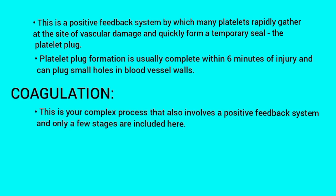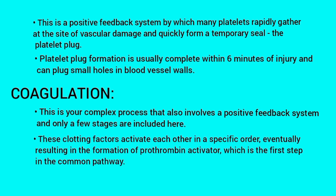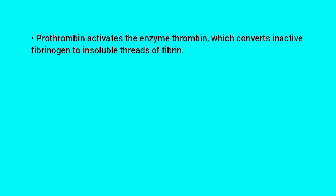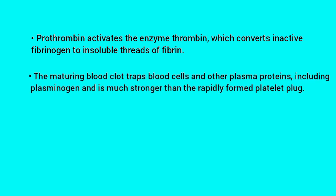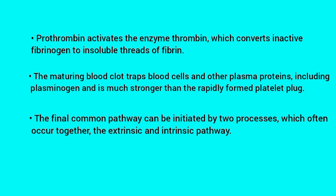The platelet plug. Platelet plug formation is usually complete within six minutes of injury and can plug small holes in blood vessel walls. Coagulation. This is a complex process that also involves a positive feedback system, and only a few stages are included here. These clotting factors activate each other in a specific order, eventually resulting in the formation of prothrombin activator, which is the first step in the common pathway. Prothrombin activates the enzyme thrombin, which converts active fibrinogen to insoluble threads of fibrin. The maturing blood clot traps blood cells and other plasma proteins, including plasminogen, and is much stronger than the rapidly formed platelet plug.